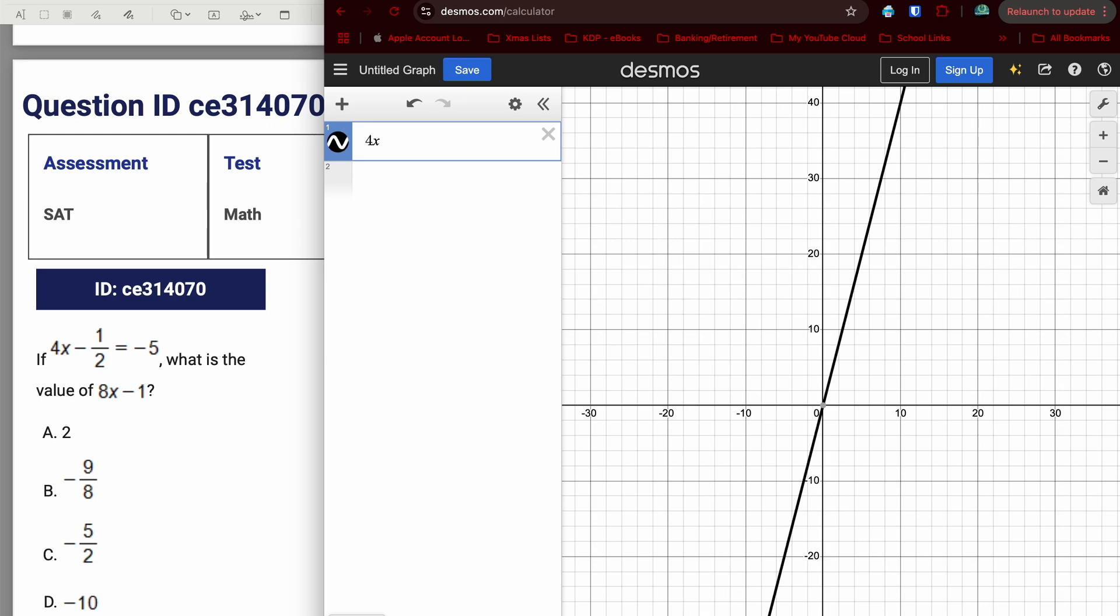So we're going to put the left hand side of the equation in first. So I'm going to have that 4X minus. And if I didn't want to do a one half, I could do a 0.5 right there. Doesn't make any difference. And then, again, we've got to remember a single number on that right hand side. I can't put in negative 5. It's not going to do anything. So I'm going to have to remember Y equals negative 5.